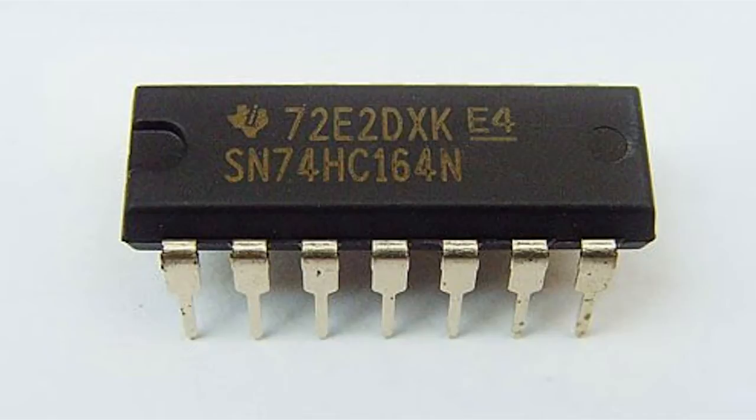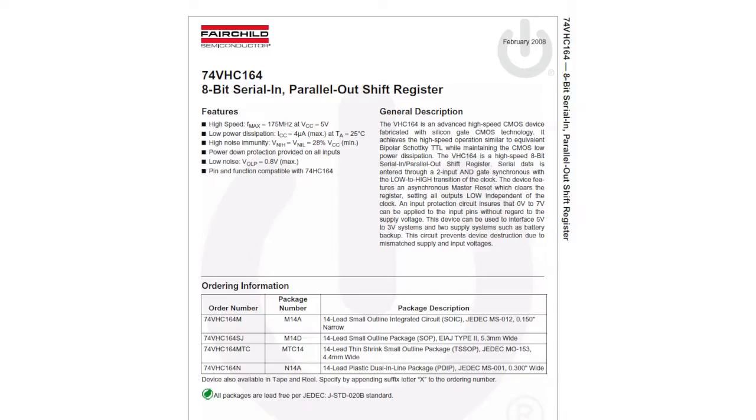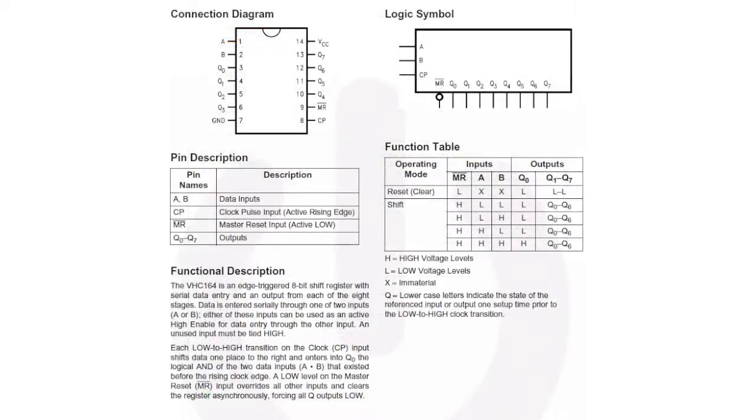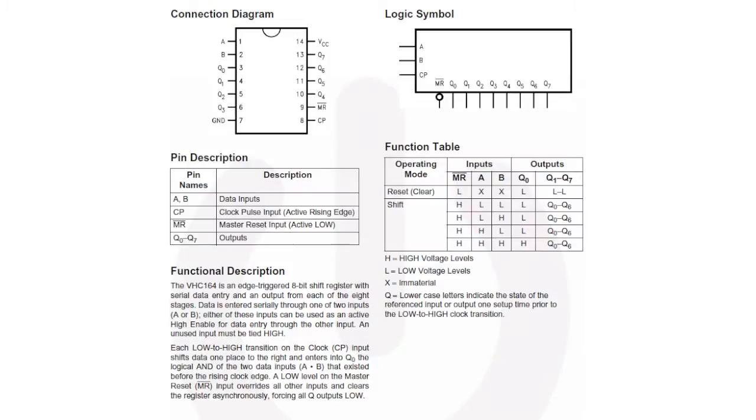Here's the datasheet for the 74-Series 164 shift register. It has two data inputs, which are labeled A and B.